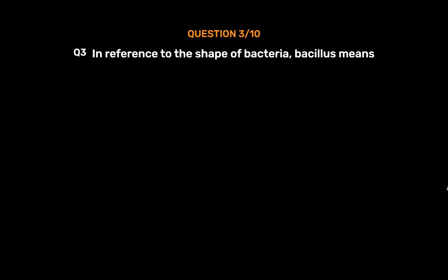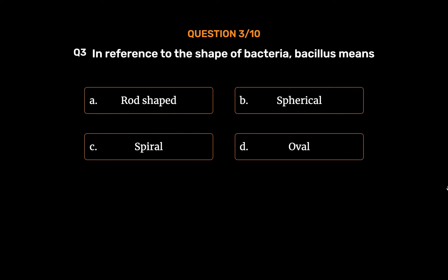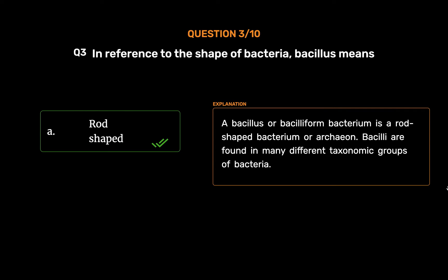Question No. 3. In reference to the shape of bacteria, Bacillus means — Option A: Rod-shaped. Option B: Spherical. Option C: Spiral. Option D: Oval. The correct answer is Option A: Rod-shaped. A bacillus or bacilliform bacterium is a rod-shaped bacterium. Bacillia are found in many different taxonomic groups of bacteria.